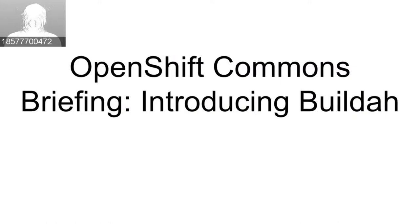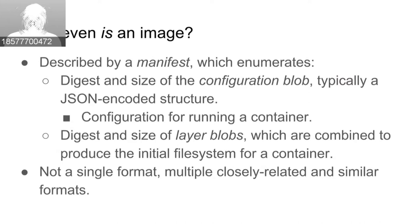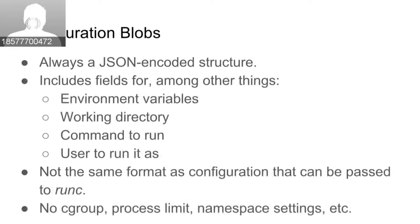Let's back up and see what problem we're trying to solve. An image is described by a manifest — a JSON document that lists a few things along with their digest IDs and type information. For the purposes of building images, the things we're most interested in are the configuration blob and the filesystem layers.